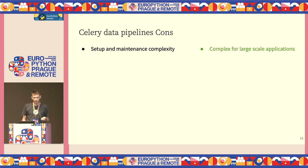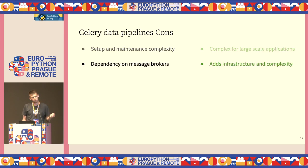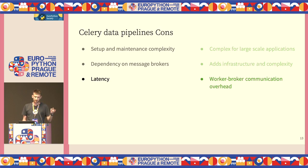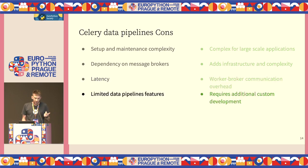As for the cons: there is setup and maintenance complexity — as your application scales, it becomes more difficult to set up and maintain. There's also dependency on message brokers, which adds infrastructure costs. Our team uses Redis; others might prefer RabbitMQ. Because we use message brokers to communicate, we introduce latency in worker-broker communication. And there are limited data pipeline features, since Celery is a general-purpose task messaging queue, so some features require custom development.